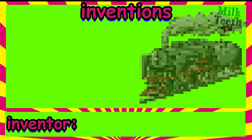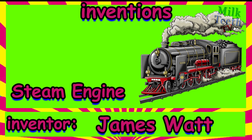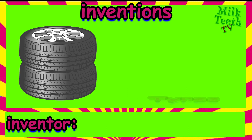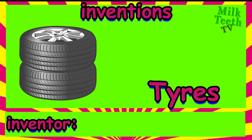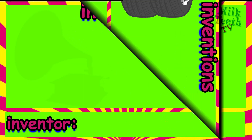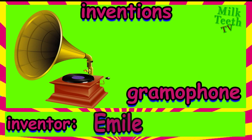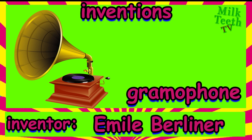This is a steam engine, invented by James Watt. These are tires — you find them on your car and scooters. They are made with rubber, filled with air, and fitted on a metal rim. They were invented by John Dunlop. This is a gramophone, an old-fashioned device used to record sound. It was invented by Emil Berliner.